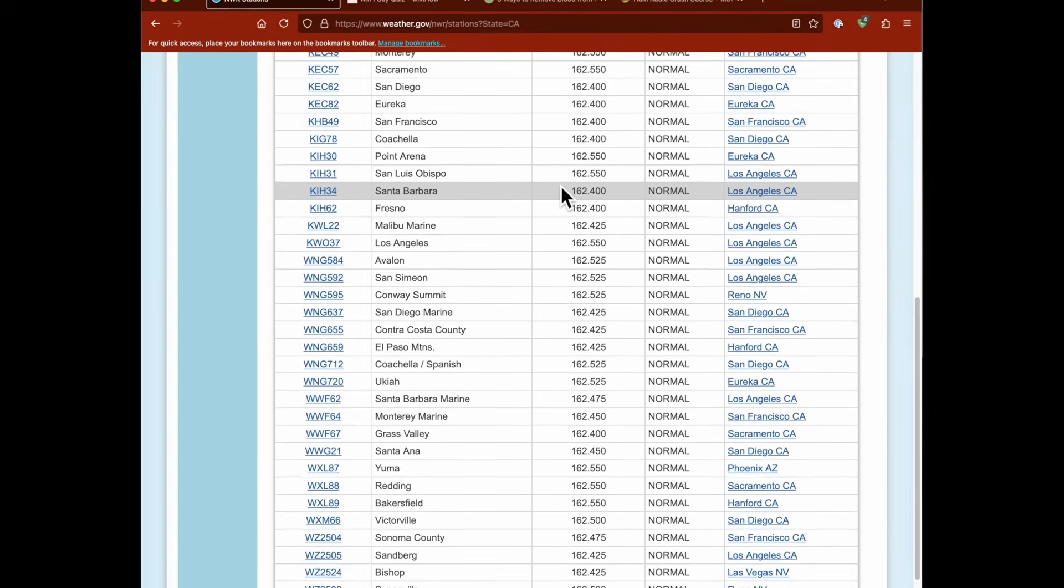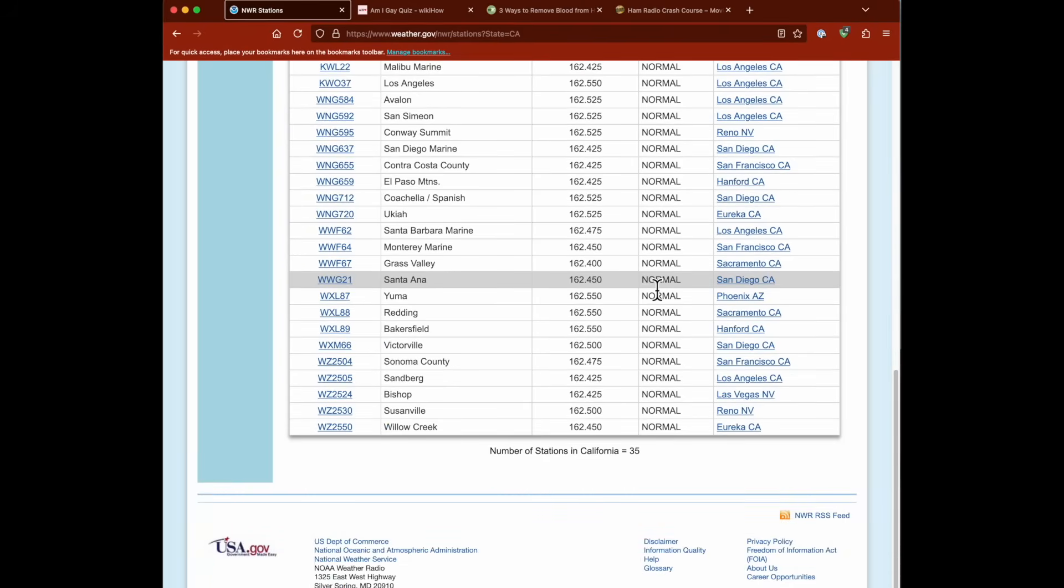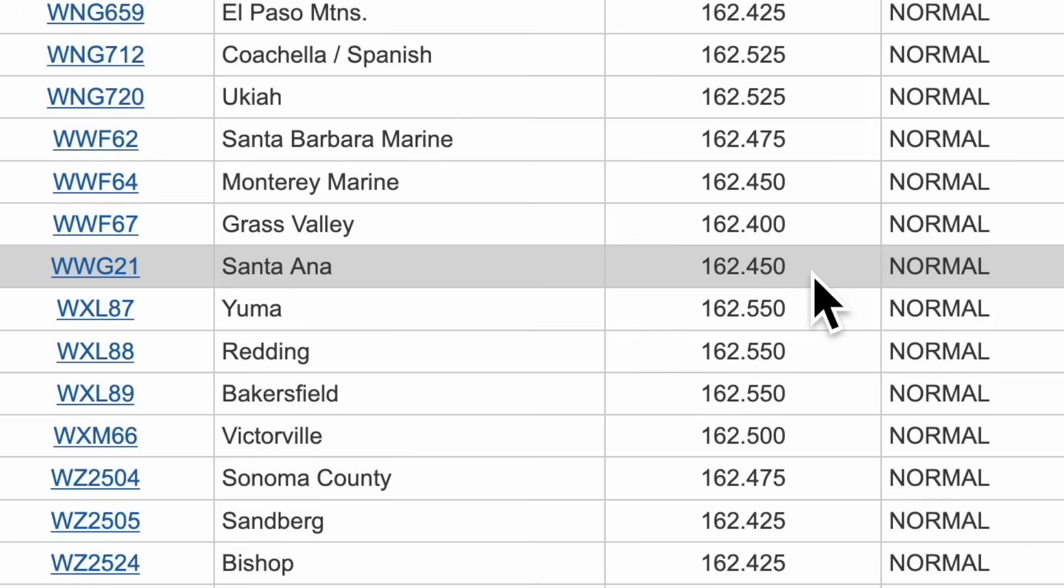For my example, I will be using the Santa Ana, California station, which is about 40 miles from me, and it is on frequency 162.450 megahertz.